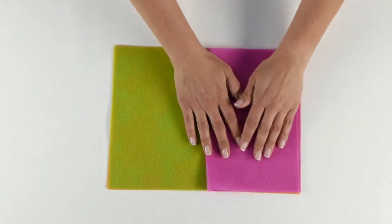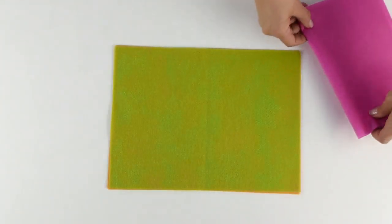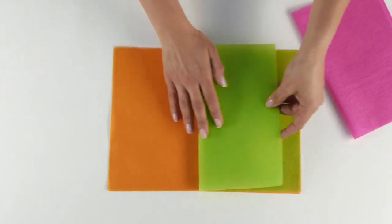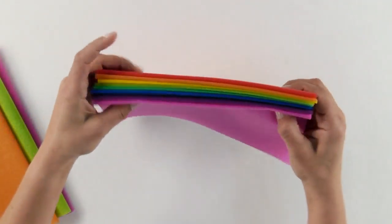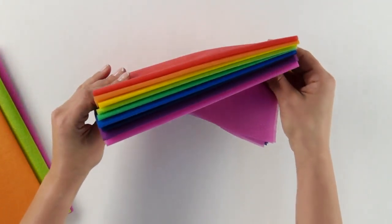Folding. SmartFab is really easy to crease and fold, and it holds its shape. All you have to do is crease it firmly, and the fold will stay in place.